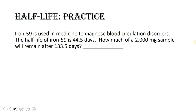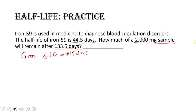Let's do a couple of practice problems. Iron-59 is used in medicine to diagnose blood circulation disorders. The half-life of iron-59 is 44.5 days. How much of a 2-milligram sample remains after 133.5 days? What are we given? We're given our half-life of 44.5 days, an original sample of 2.00 milligrams, and a total time of 133.5 days.